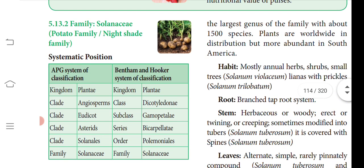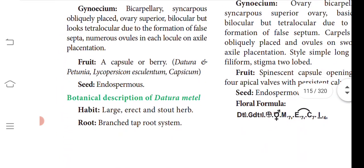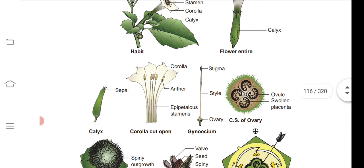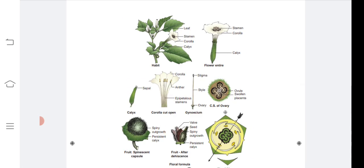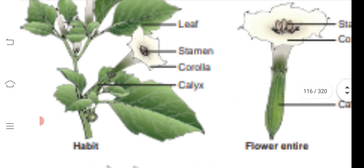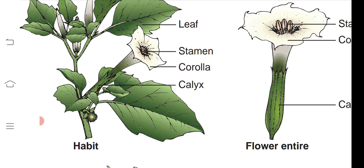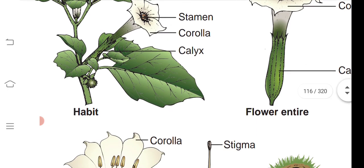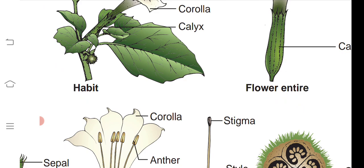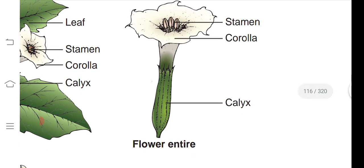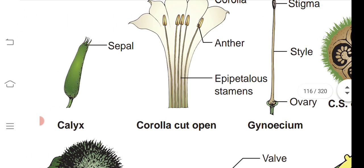Next we have the family Solanaceae. The type study involves taking one flower and learning about it. You can see an herbaceous stem; the flower is not an inflorescence but a single axillary flower arising from the axil of the leaf. The corolla may be white or violet in color; calyx, corolla, and stamens are visible, and the leaf has small hair-like projections.